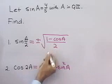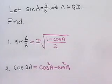Either of these two formulas that I use, I'm going to have to find the cosine of A. I have the sine of A, so let's find the cosine of A.